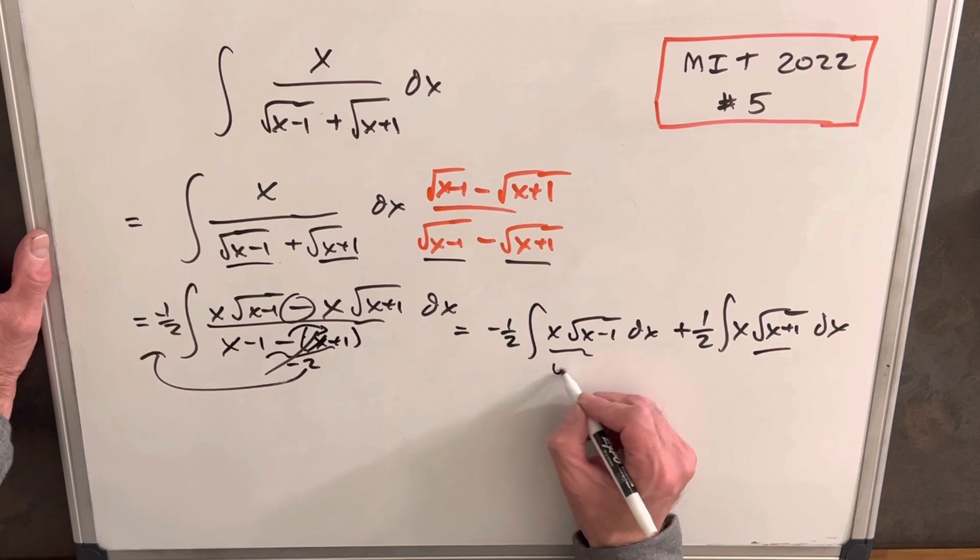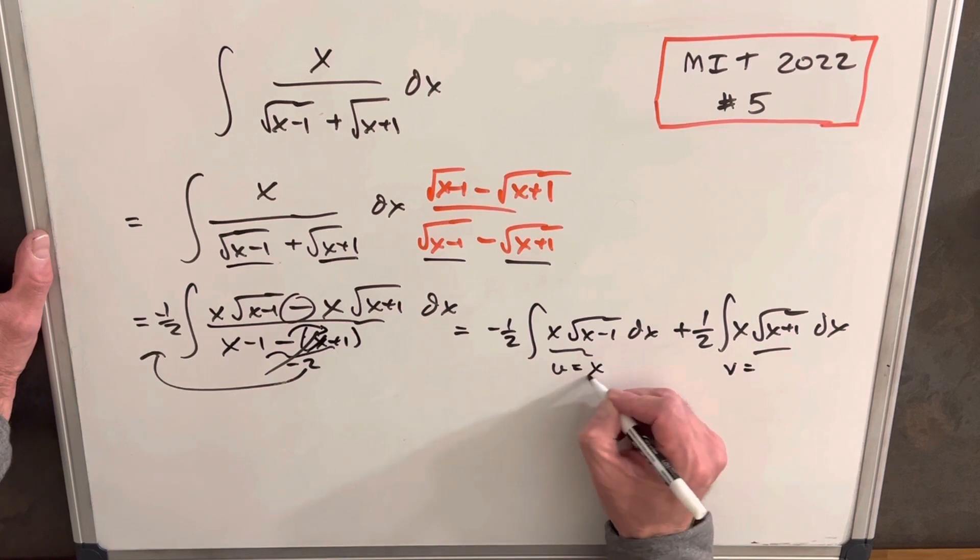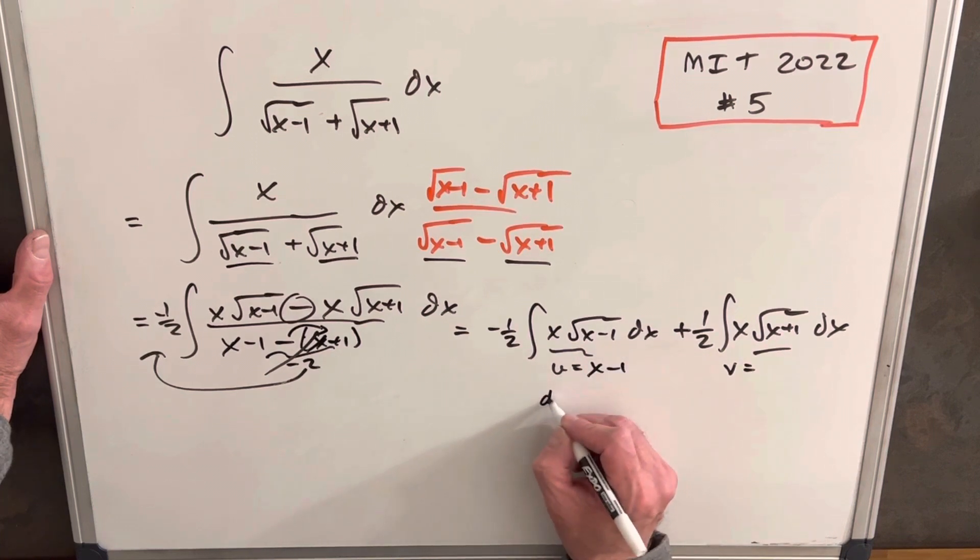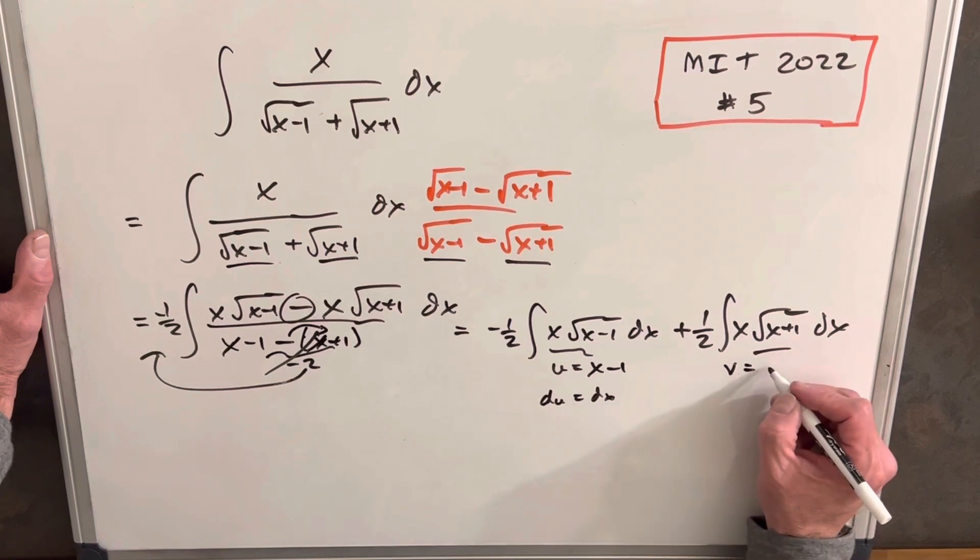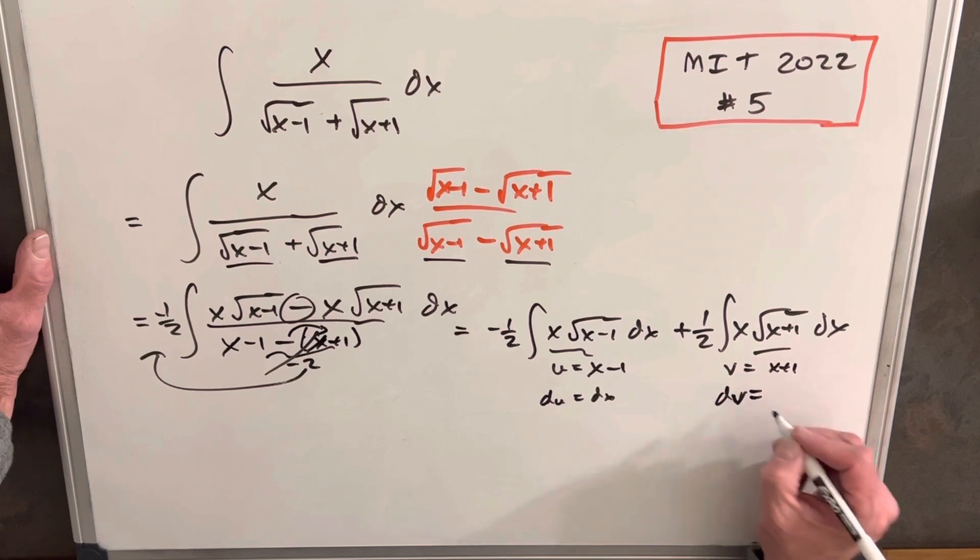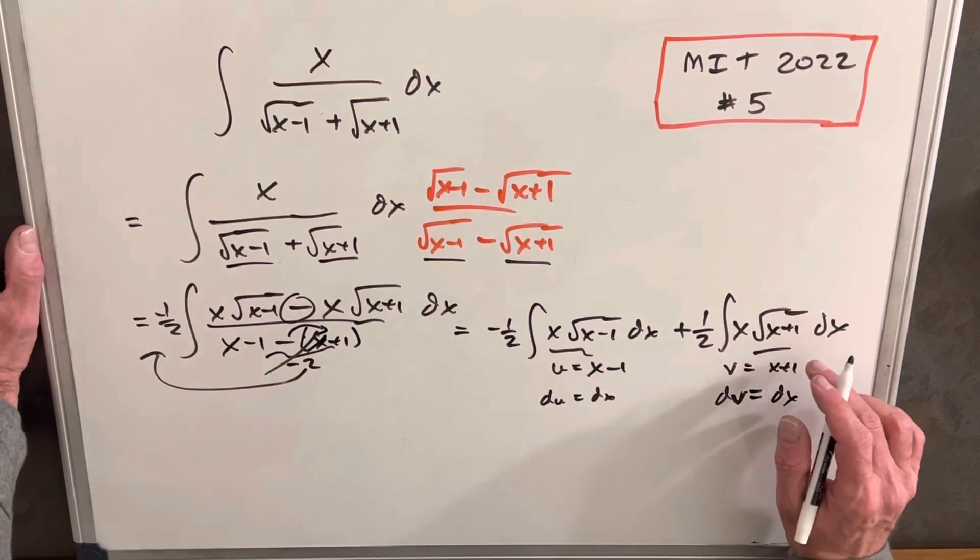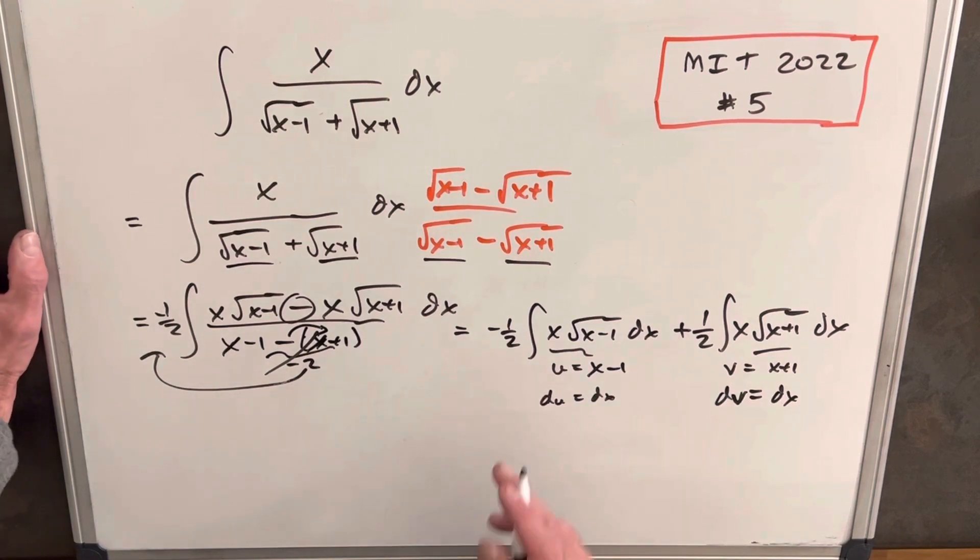So what I'm going to do, we'll do two separate u substitutions, but so we don't confuse the variable, I'll call it a v on the right side. So we'll say u equals x minus 1, so du equals dx. And then over here, we'll do v equals x plus 1, dv equals dx. So that we're going to get the simplification in the radical in both of these expressions.